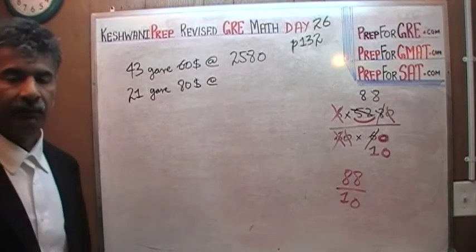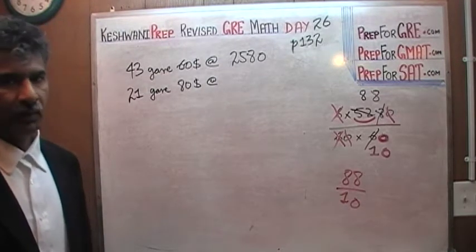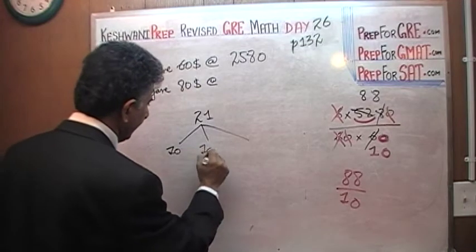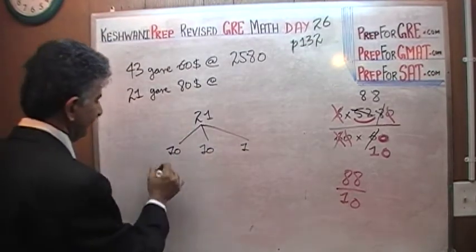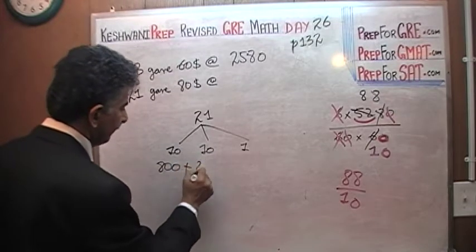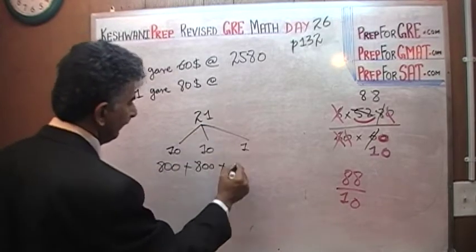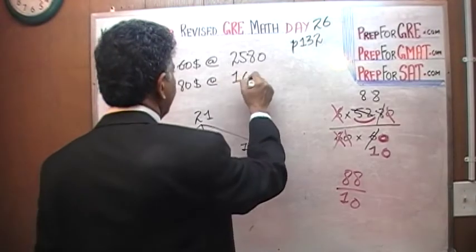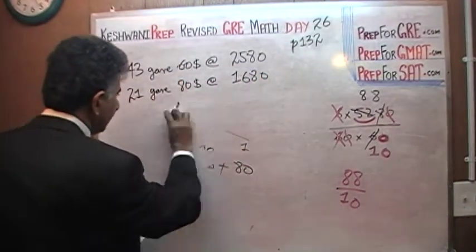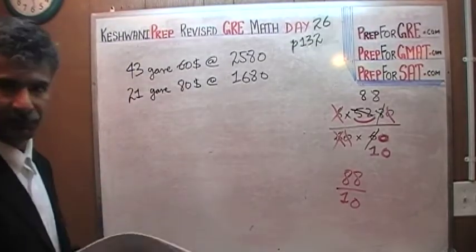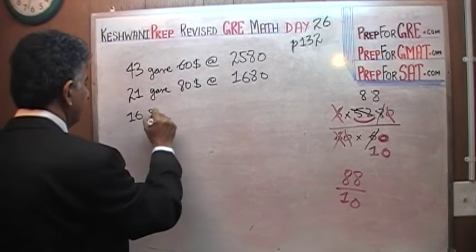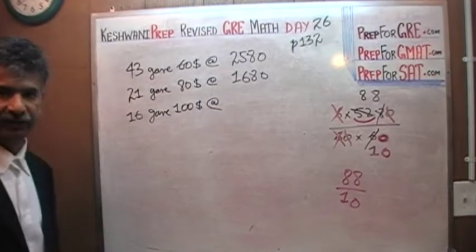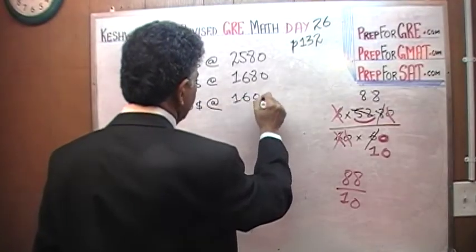21 people gave $80 each. You have to learn how to chop it up. Don't look at 21 as 21, look at it as 10, 10, and 1. 10 eighties are 800, another 10 eighties are 800 again, and one more 80. 800 plus 800 is 1,600, 1,600 plus 80 is 1,680. 16 people gave $100 each. That's $1,600. Let's add them up.